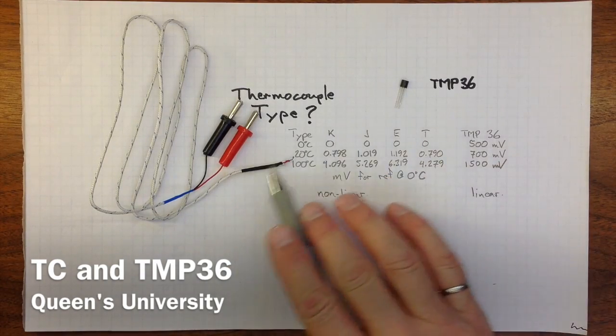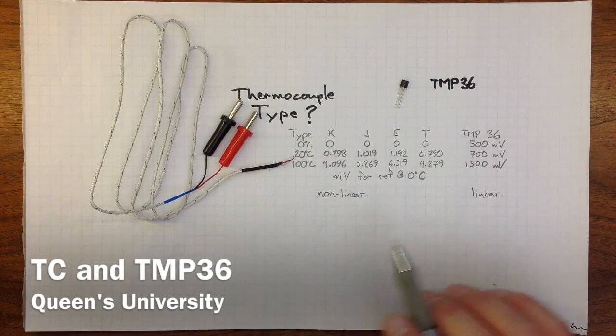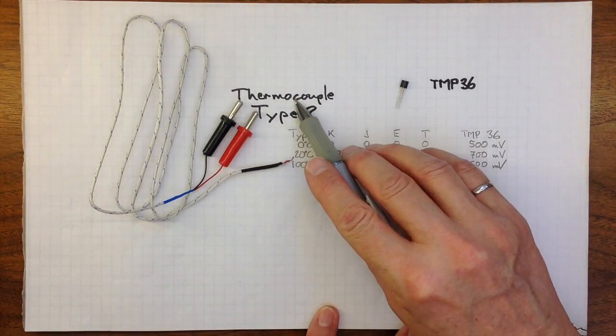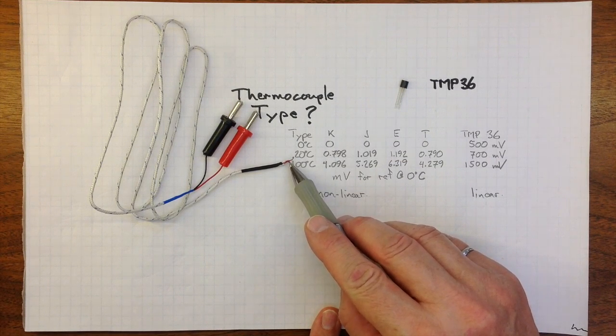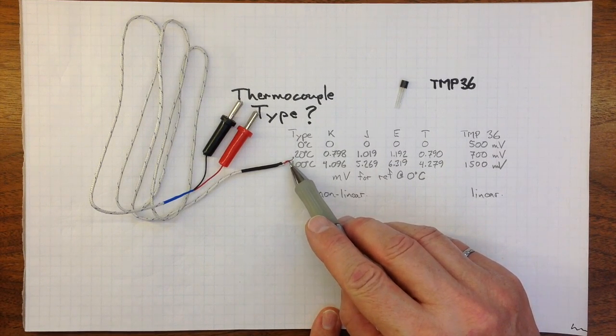These two transducers are the ones that we're going to use in this lab. We've got two types here. We've got a thermocouple, which is this tiny little joint here between two pieces of wire made out of different metals.